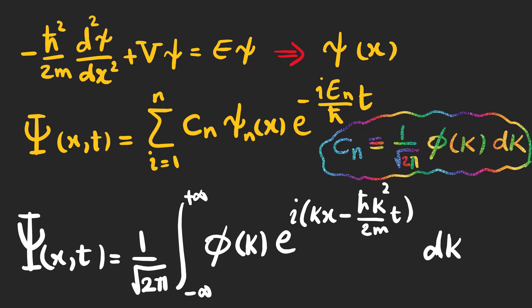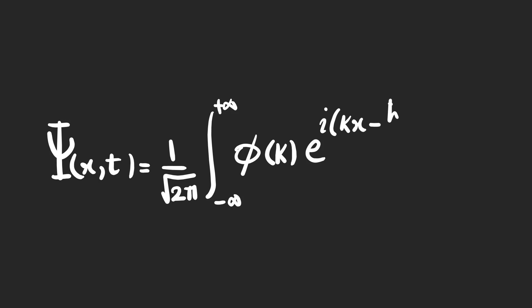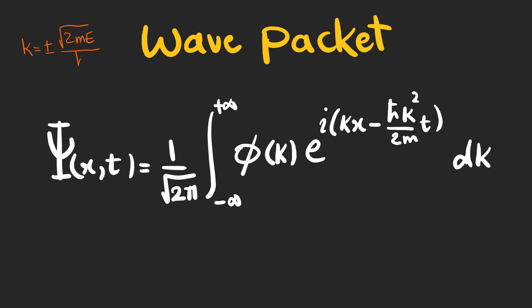Now, this wave function is normalizable. Writing the wave function in this format, which is a wave packet, carrying a range of k's and therefore a range of energies and speeds, gives us the power to deal with the free particle.